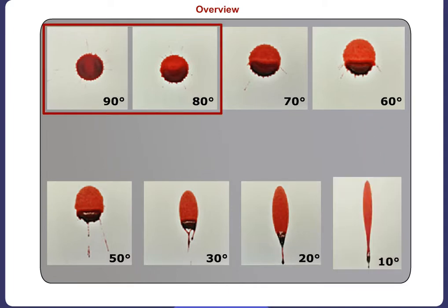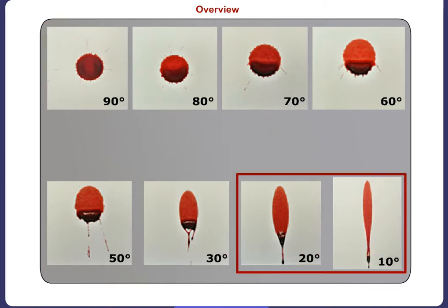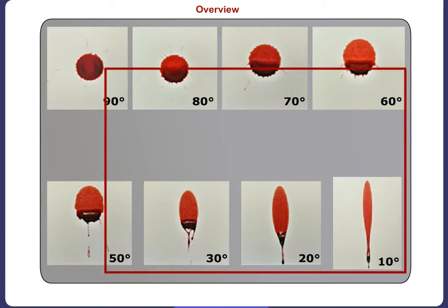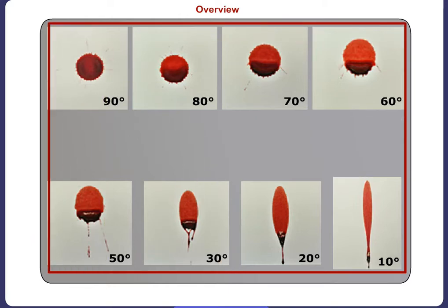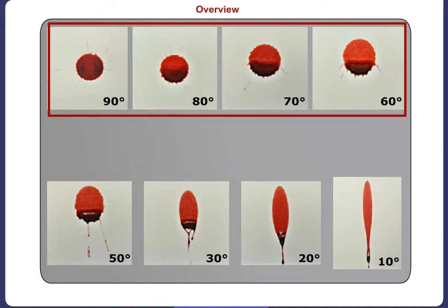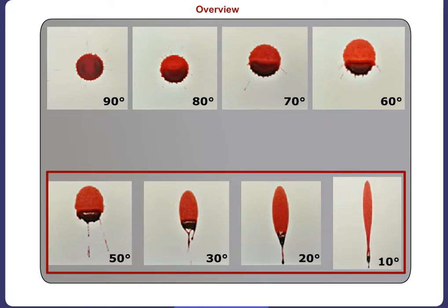A circular stain indicates an angle that is more perpendicular, such as 80 or 90 degrees. The more elliptical the shape of the stain, the more acute is the angle of impact. As you can see in these images, the higher the angle of impact, the more circular the resulting stain will be. The lower the angle, the more elongated and elliptical the stain will be.